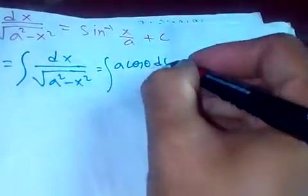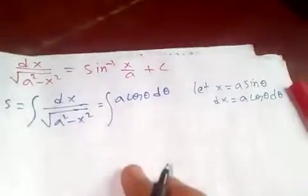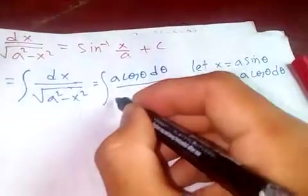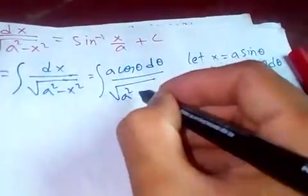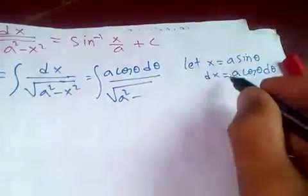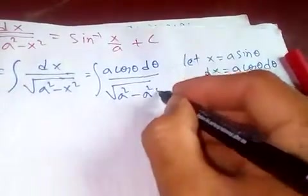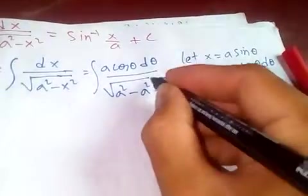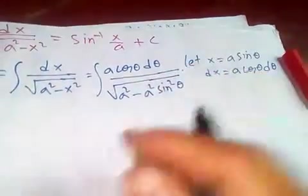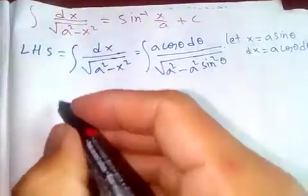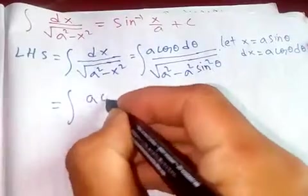Over square root of a squared minus x, which is a squared sine squared theta. This becomes the integral of a cos theta d theta.